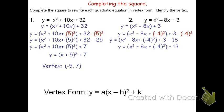Rewriting the quantity x squared minus 8x plus negative 4 squared as factored form or area as a product, I would get the quantity x minus 4 squared, with minus 13 at the end. I can now find the vertex of this parabola. The vertex is going to be at 4 comma negative 13.